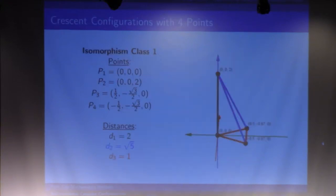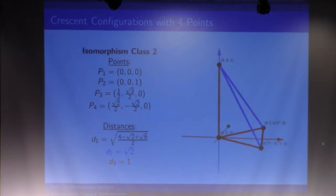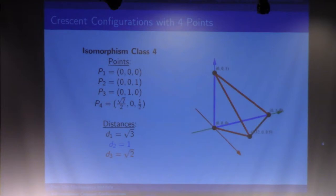I'm going to label them one, two, three, and four. You've seen the first one. The second one is this, the third one here, and the fourth one there. So we can find all four of those. That's great, right? We have all the four-point crescent configurations in R³.